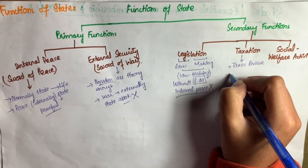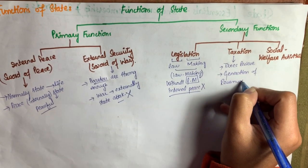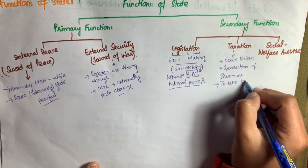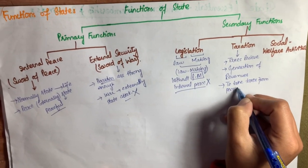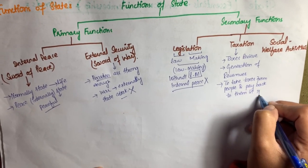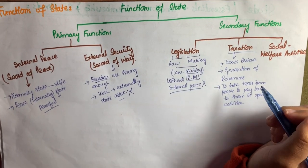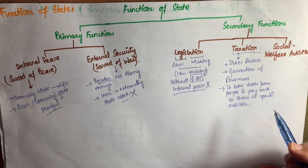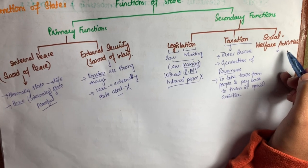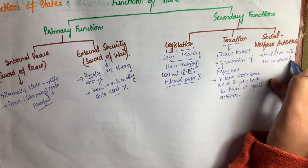Next is taxation, which means receiving taxes from the people, generation of revenues to perform functions for citizens of the state — collecting money from the people and paying it back through different activities. Next is social welfare activities, which are activities conducted for the benefit of common citizens and the advantage of common people of the state.